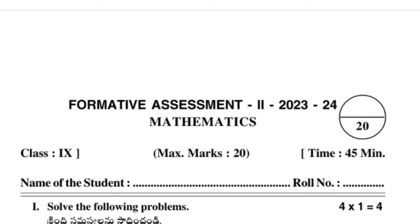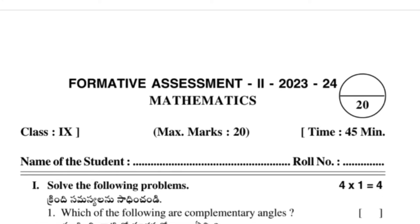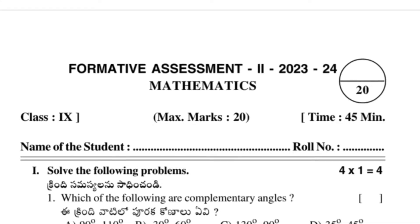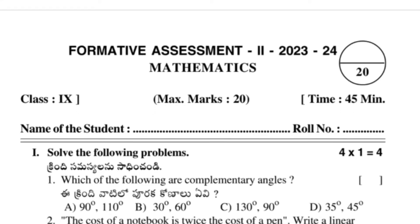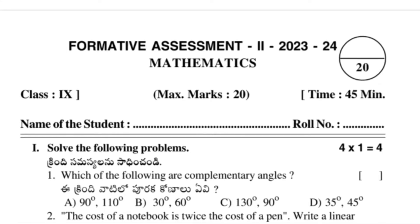Ninth class mathematics FA2, or formative assessment 2, 2023 to 24. Let's see the questions as well as answers. In the first section we have solve the following problems—four questions, each question carries one mark. The first question is: which of the following are complementary angles?